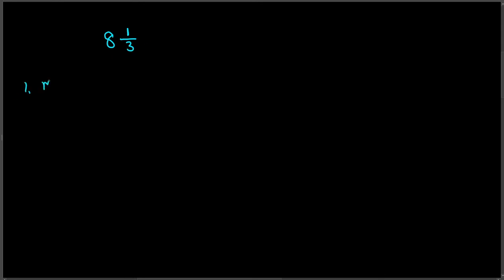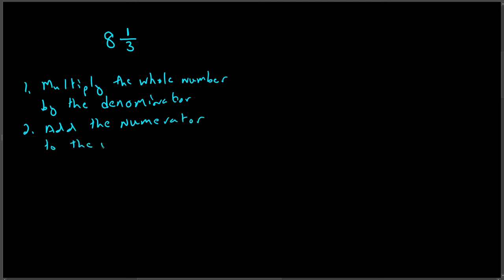So, the steps in the book is multiply the whole number by the denominator, add the numerator to the result. Place the result over the original denominator.